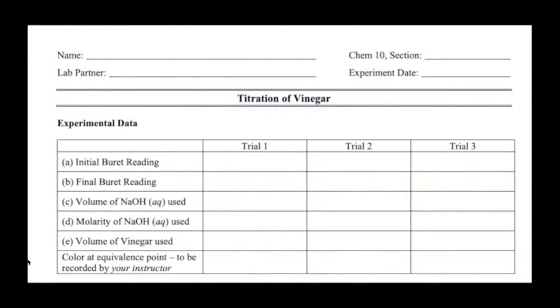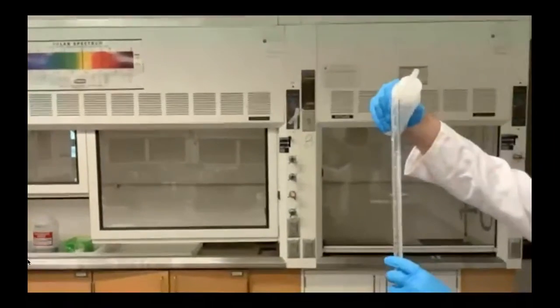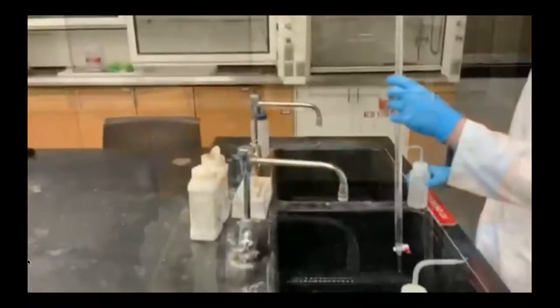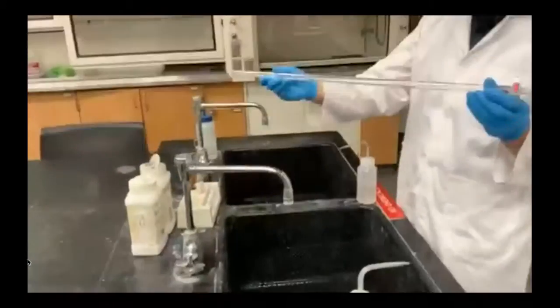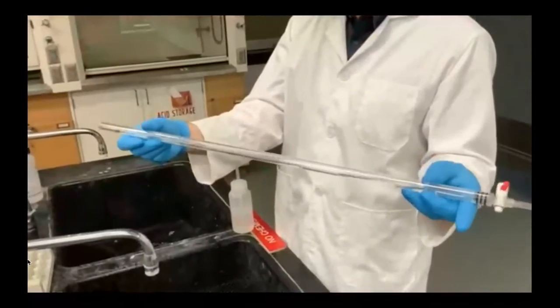On your lab sheet there is an experimental data table where you will record your data. First, we want to rinse the burette with deionized water. Swirl that around, give it a quick clean, and empty some into the sink.